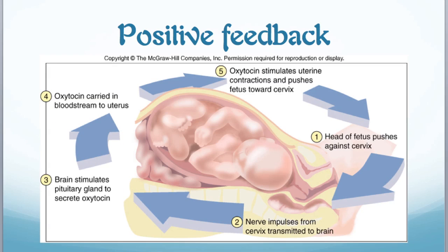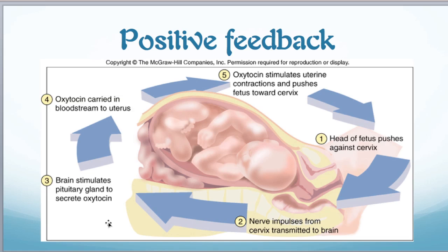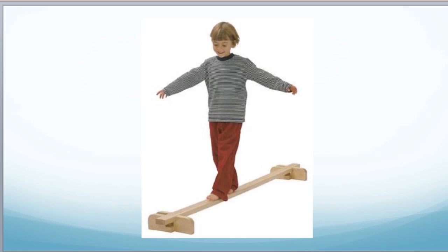That is positive feedback — mild pressure or contractions to the smooth muscle in the uterus stimulate a process by which we make those contractions bigger and bigger, amplifying the effect in a cascade, pushing the variable further in the direction it was already going. Positive feedback is the second of the two systems — negative and positive feedback — that help us maintain balance in the human body. We'll see you another time.